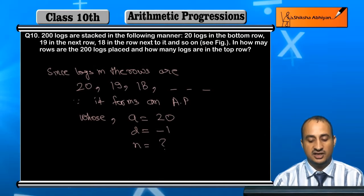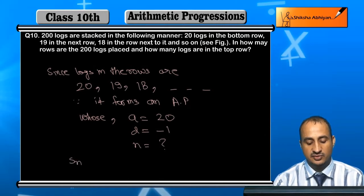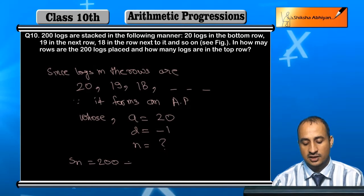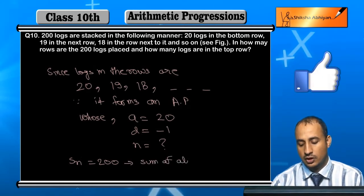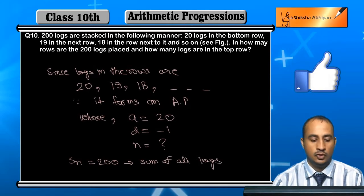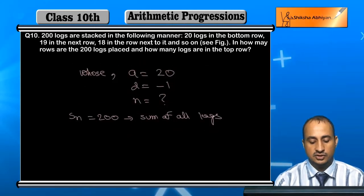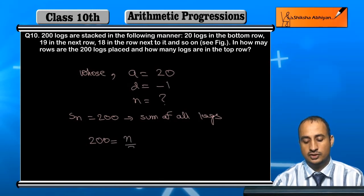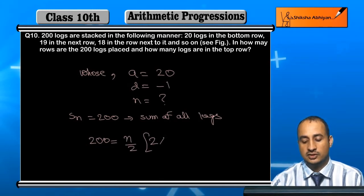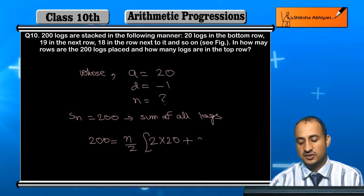Student, here we are given Sn, Sn is equal to 200. We are given sum of all logs, which is 200. So 200 is equal to n by 2 into 2a plus n minus 1 times d. Now 2a is 2 times 20.